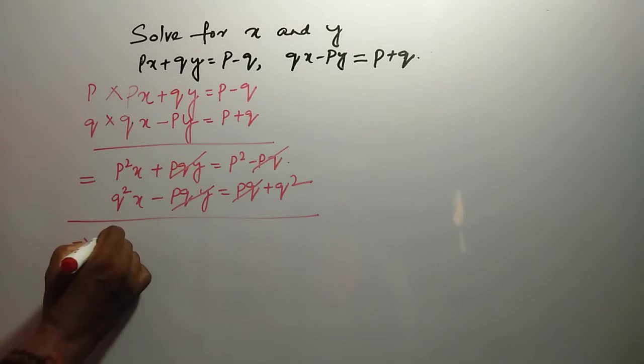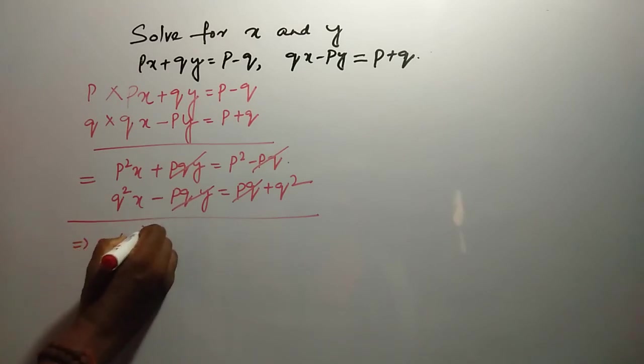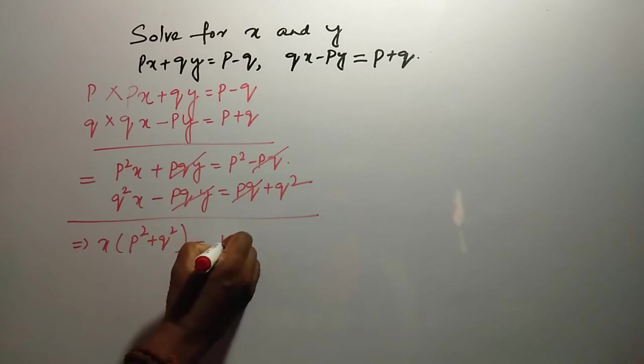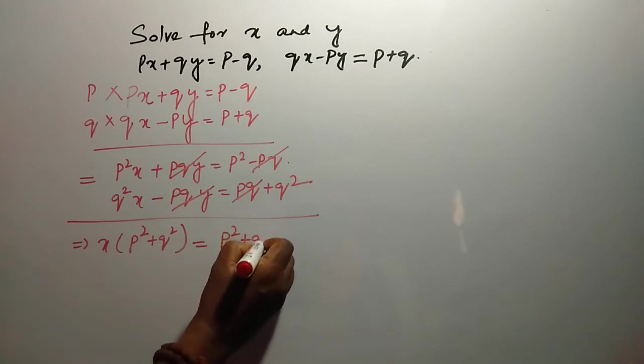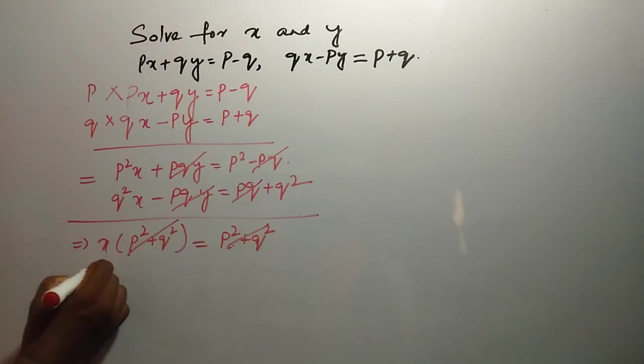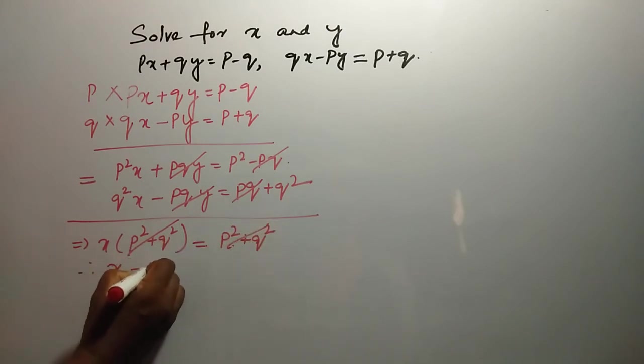It is X is common P square plus Q square is equal to P square plus Q square. Now, cancelling both, X is equal to 1.